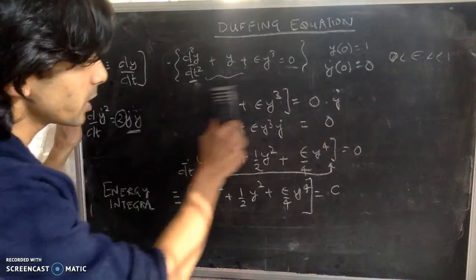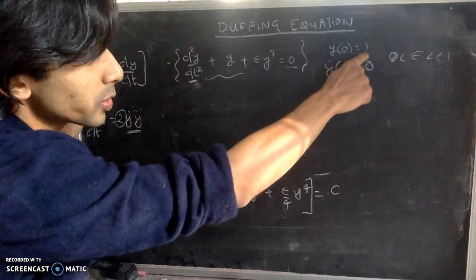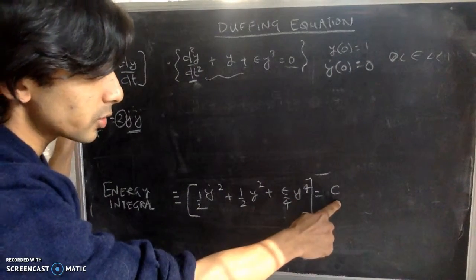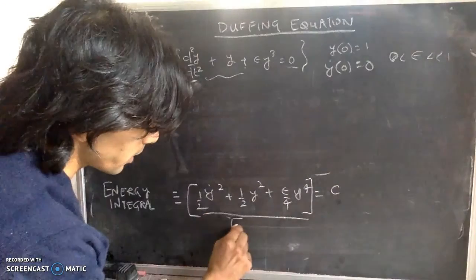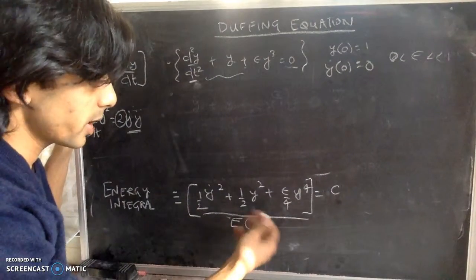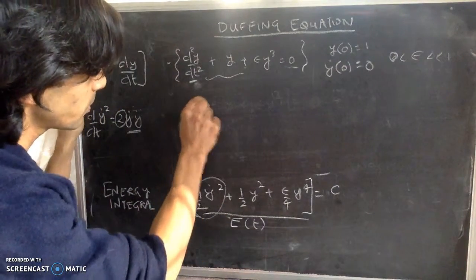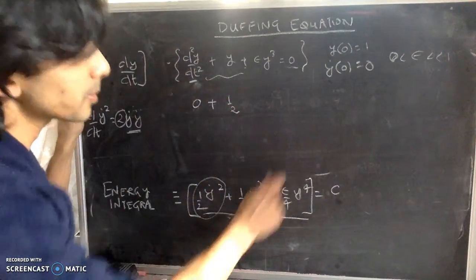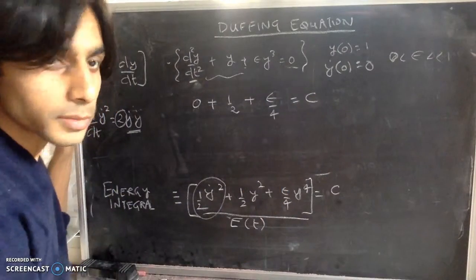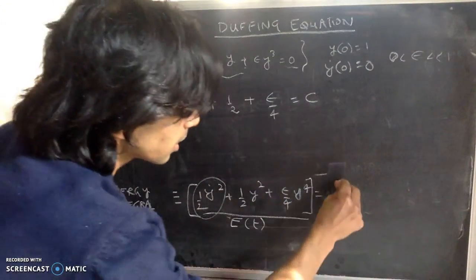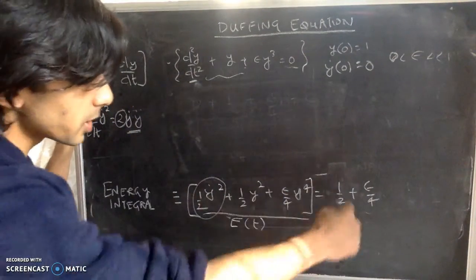To evaluate that constant, we use our initial conditions. We know y'(0) = 0 and y(0) = 1, and since the constant is independent of time, evaluating at t = 0 gives: the first term is zero, the second term is (1/2)·1² = 1/2, and the third term is (ε/4)·1⁴ = ε/4. So the constant equals 1/2 + ε/4.